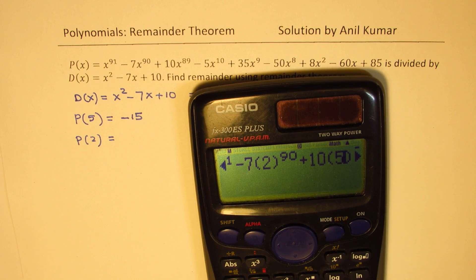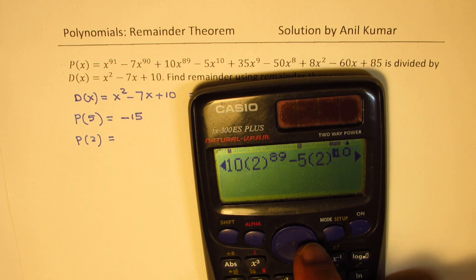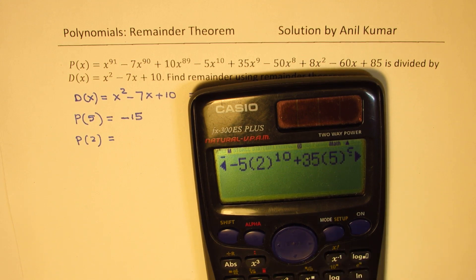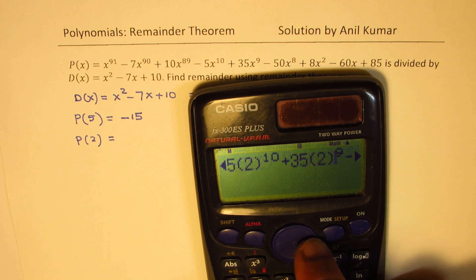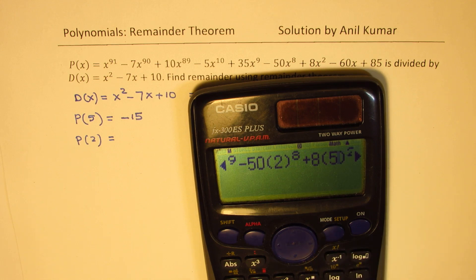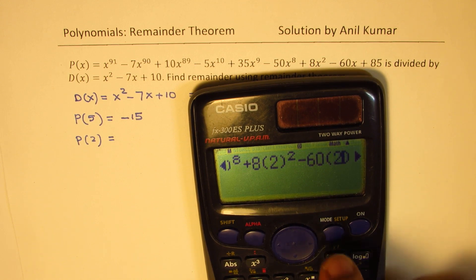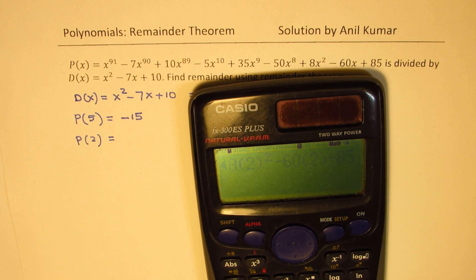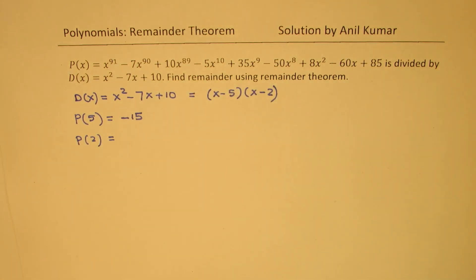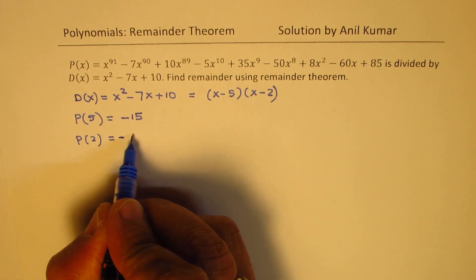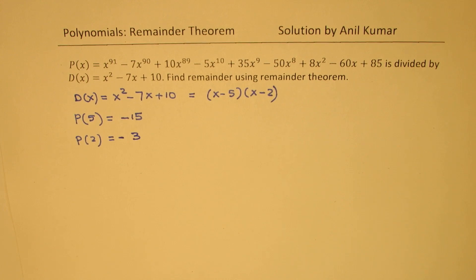Next one. And then we have... This is the last one, so we have plus 85. Let's check what this answer is. It is minus 3. So we get the value. P(5) is minus 15, and P(2) is minus 3.